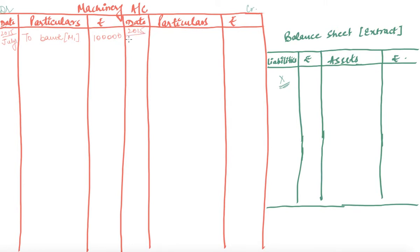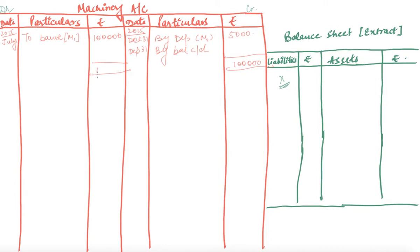We close 2015 by computing the depreciation on 31st December. By Depreciation (M1): the rate is 10% per annum, so the amount is ₹1,00,000 × 10/100 × 6/12 = ₹5,000. Then we find the balance c/d — totaling both sides gives ₹1,00,000, and subtracting ₹5,000 we get a balance of ₹95,000, which is transferred to the next year.